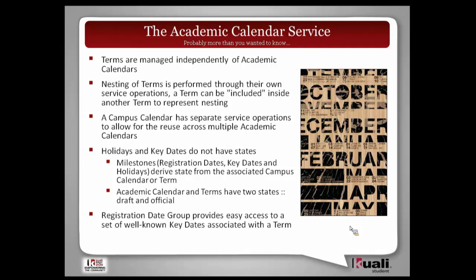Nesting can just be a nesting that doesn't constrain by date — for instance, with summer terms, they may not all be contained within each other's dates, but they're all nested as a set of summer terms. Or they technically can be included within those date parameters. The campus calendar is the idea of common stuff shared by a number of academic calendars.